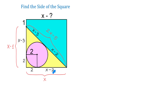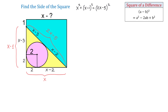To find x, we will use the Pythagorean theorem. We write that x squared plus (x minus 1) squared equals (2x minus 5) squared. To remove these parentheses, we will use the formula for the square of a difference: (a minus b) squared equals a squared minus 2ab plus b squared.